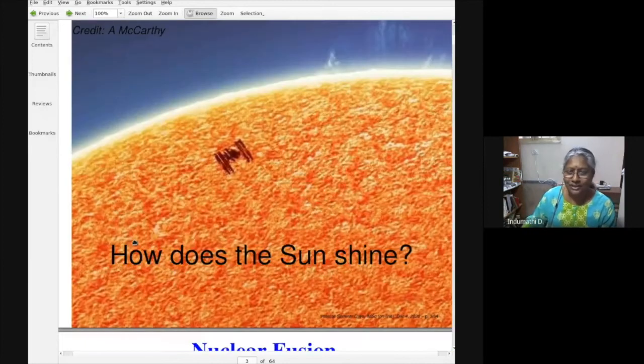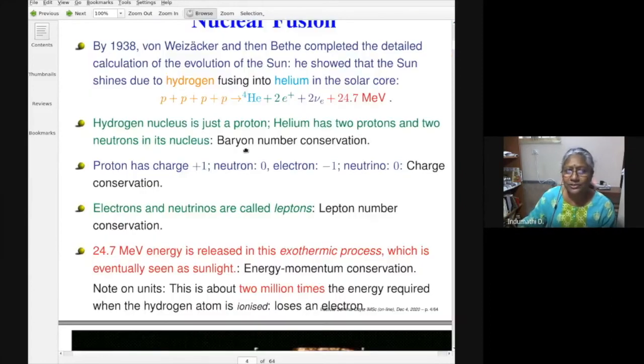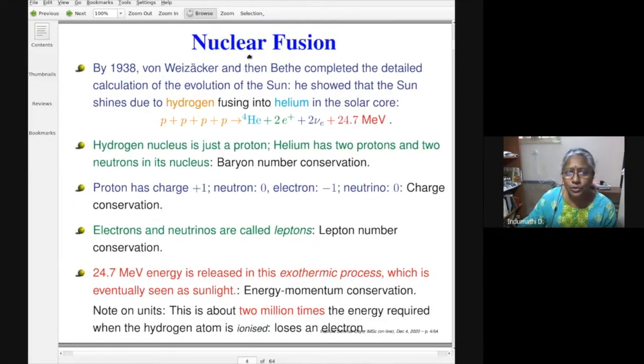So the first question, which was asked in the title, how does the sun shine? A beautiful photo taken with the ISS in the foreground. And how does the sun shine? So we know the answer to this question. We know that the sun shines through nuclear fusion. This is something that we learned in school.